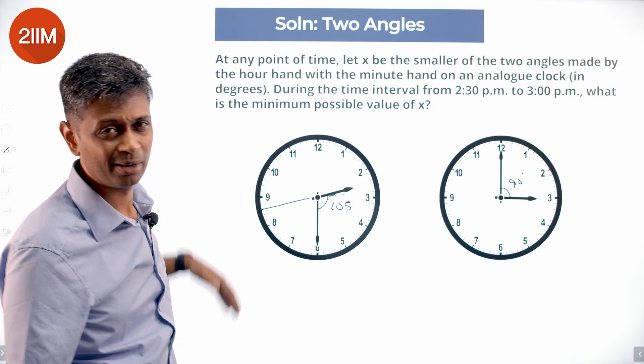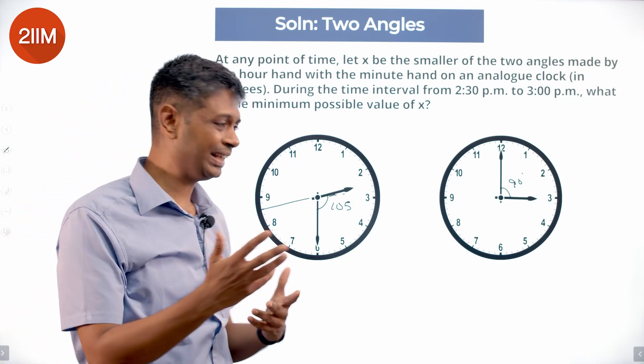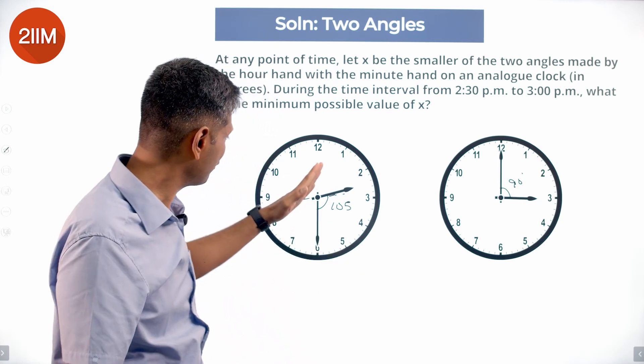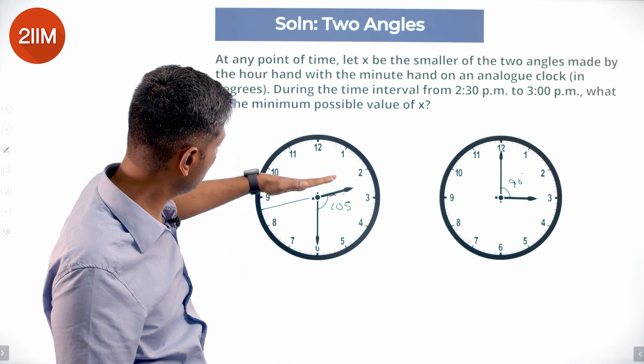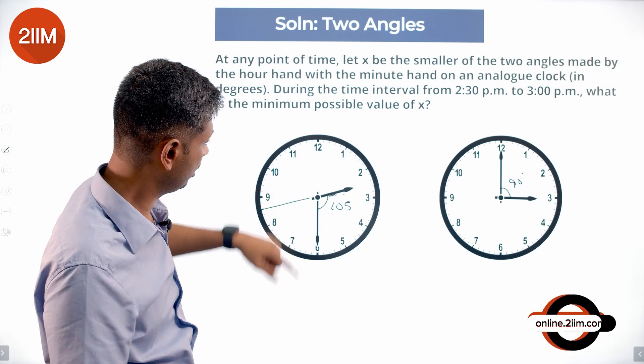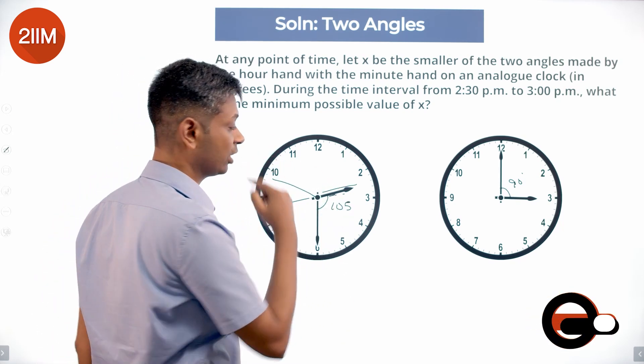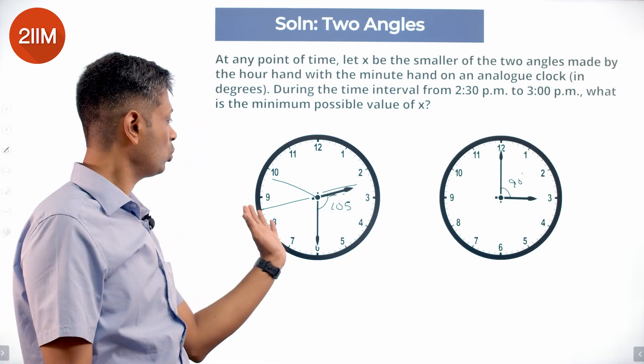At which point it will be a straight line, probably at 2:48 or 2:48:30 or something like that. After which, the angle, the remaining angle, the other angle on the clock, let's say the time is something like 2:50, this angle will be less than 180. That will be the smaller angle. From 180 it will keep on reducing.